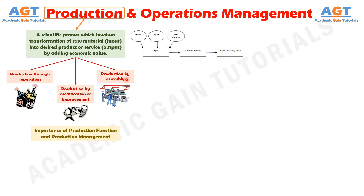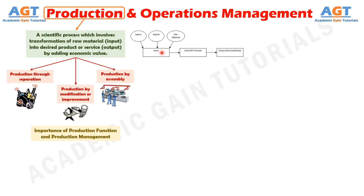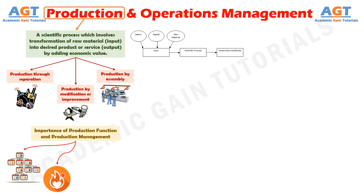So, what is the importance of production function and production management? Successful organizations have well-defined and efficient line functions and support functions. Production comes under the category of line function, which directly affects customer experience and thereby the future of the organization itself. The aim of the production function is to add value to the product or service, which will create a strong and long-lasting customer relationship or association. This can be achieved by a healthy and productive association between marketing and production people.